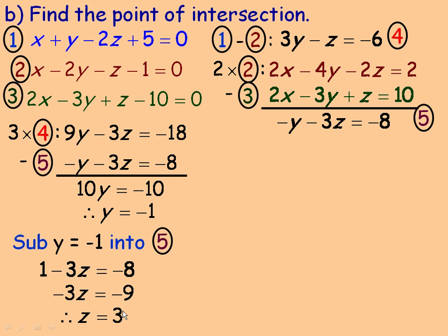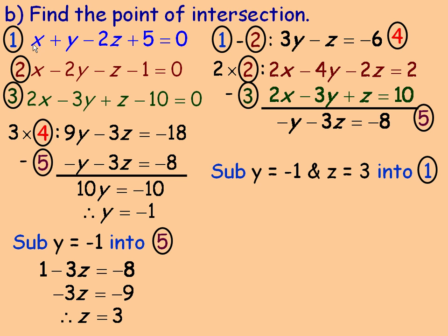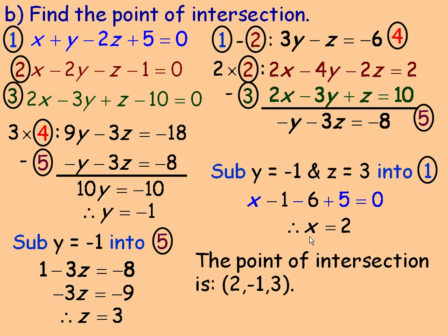The only thing left is to find the x-coordinate. Taking any of the original planes — I'll use equation 1 — and substituting y = -1 and z = 3: x + (-1) + 2(3) = 5, so x - 1 - 6 + 5 = 0, giving x = 2. Therefore, the point of intersection for these three planes is (2, -1, 3).